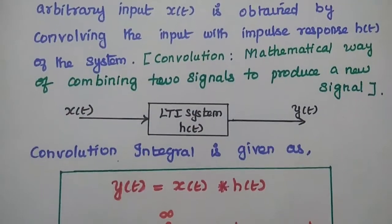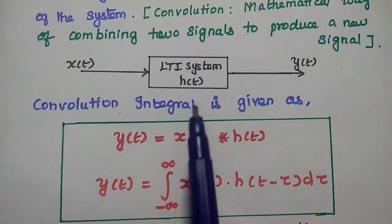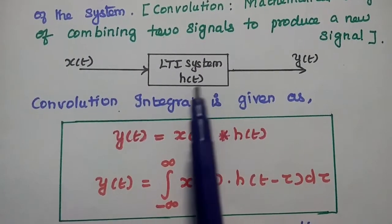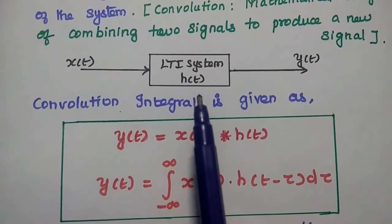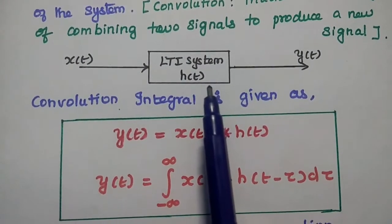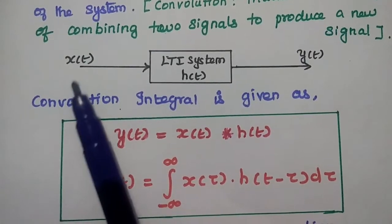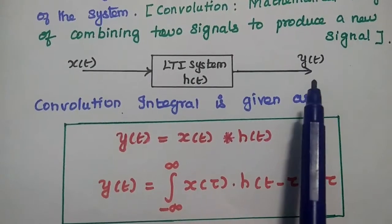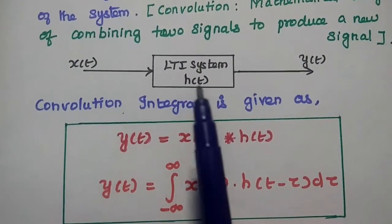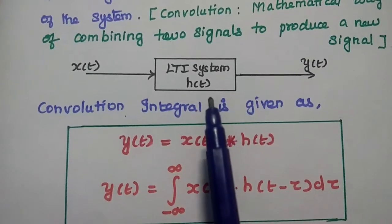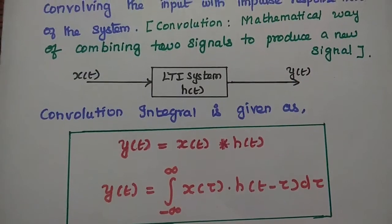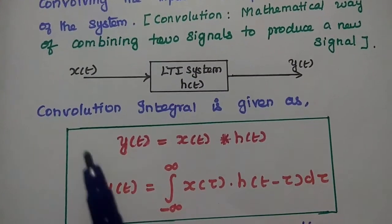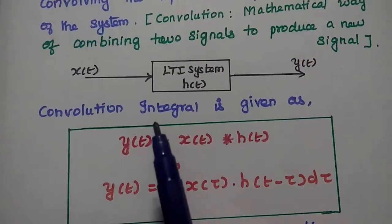This is the diagrammatic representation of convolution. This is the LTI system with the impulse response H of t. The impulse response of the system represents the behavior of the system. The input signal is X of t, the output signal is Y of t. Y of t is nothing but the convolution of the input signal and the impulse response of the system. Since we are talking about a continuous time system, the convolution is mentioned as convolution integral.